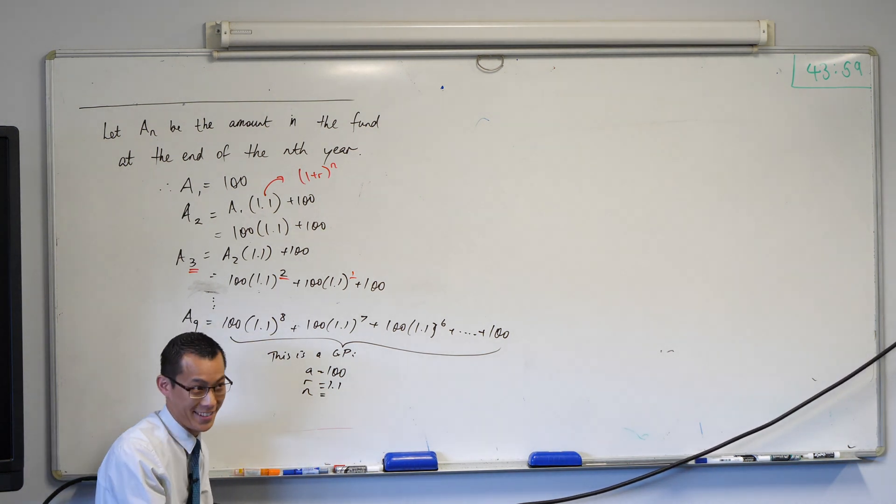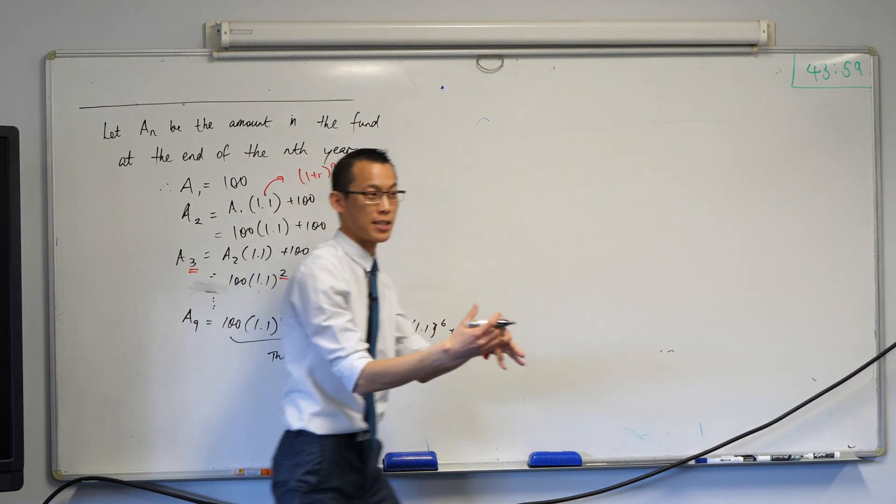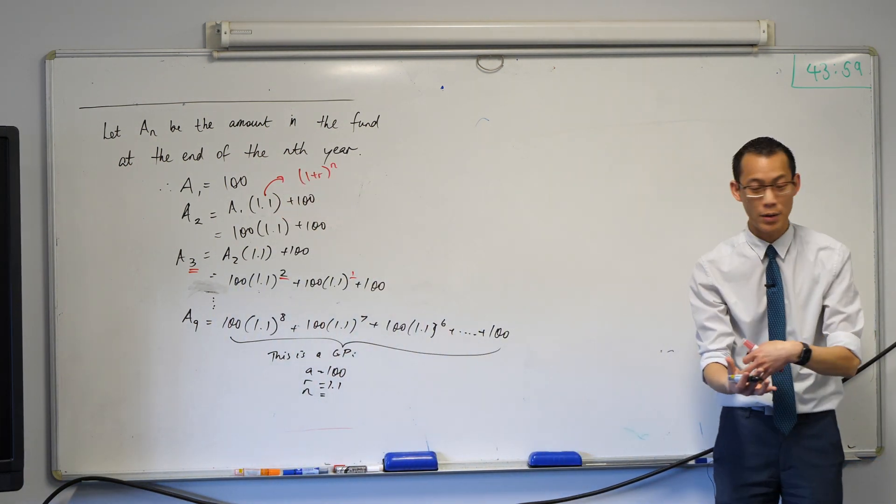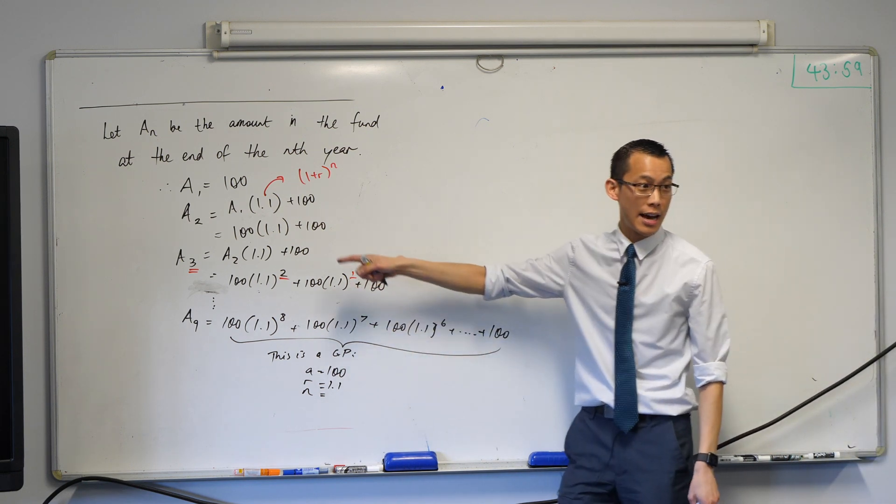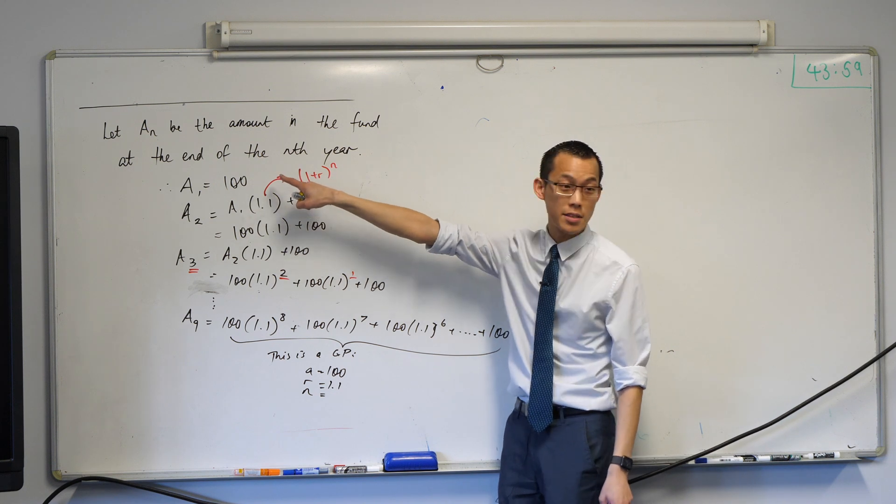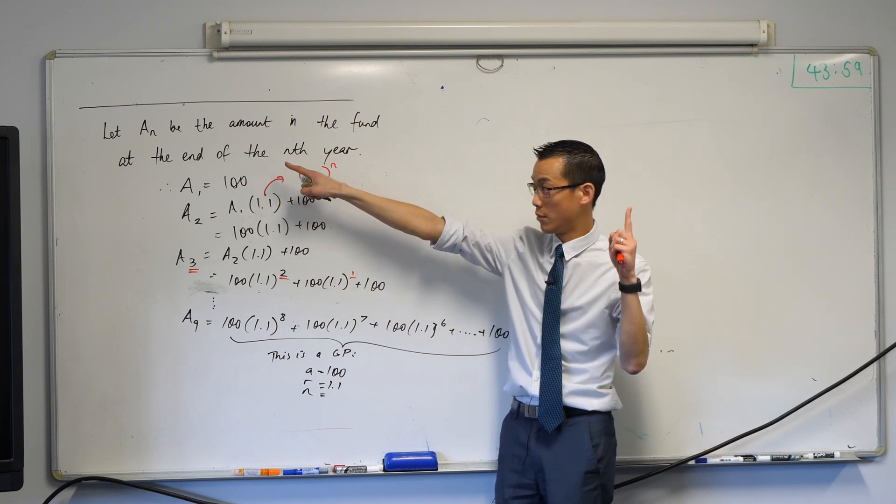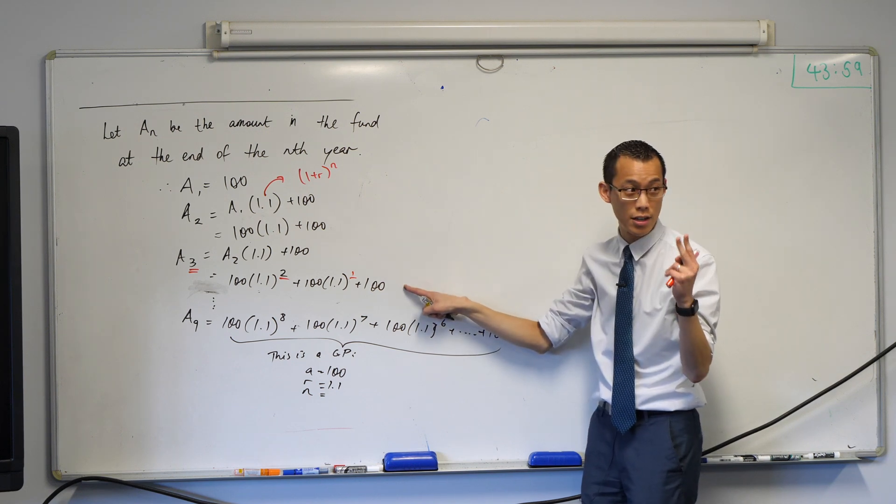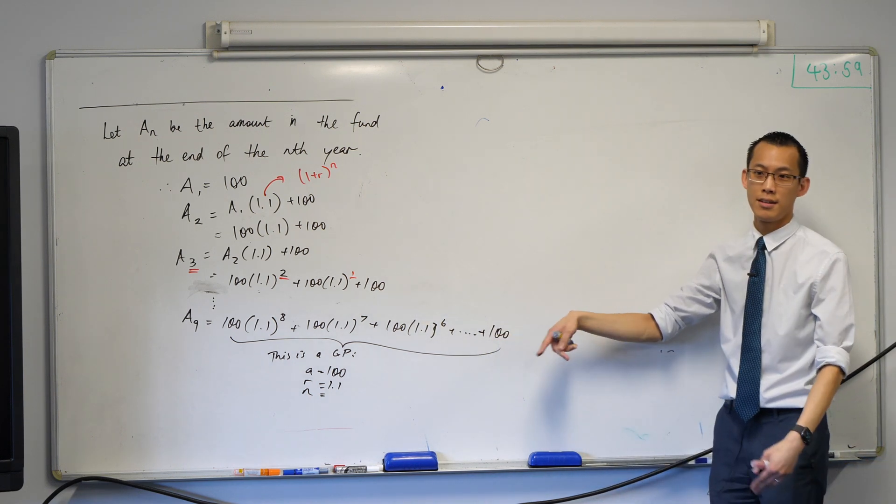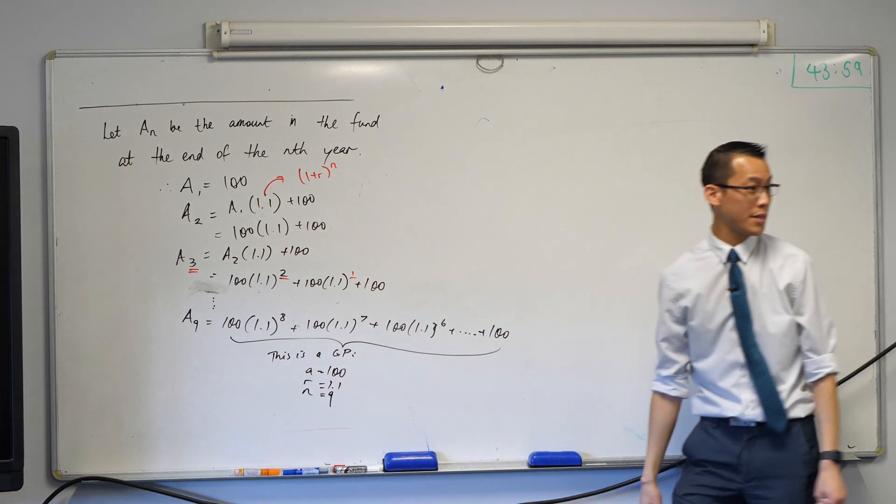How many terms? Look really carefully, right? Now, again, this is another place for problems to creep in when we're counting. So, you can follow this fairly easily. Have a look at A1. How many terms does it have? One. Look at A2. How many terms does it have? Two. A three has three terms. A nine will have nine terms. You okay with that?